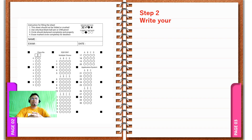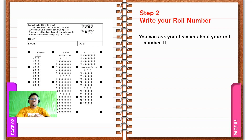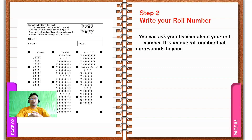Step 2: Write your rule number. You can ask your teacher about your rule number. It is a unique rule number that corresponds to your name on the database of the ABLE-B app.